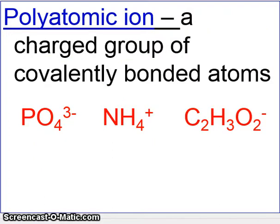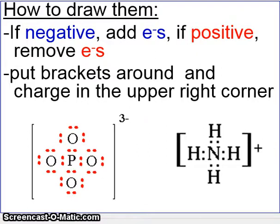Here are a few of them for you. In order to draw them, if the polyatomic ion is negative, we'll have to add electrons, because it's gained electrons. If it's positive, we'd have to remove electrons from our total. Then we'll put brackets around the whole thing and put the charge in the upper right-hand corner.